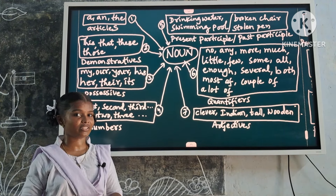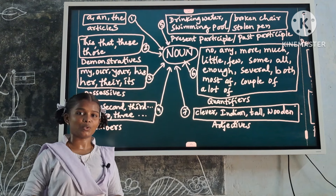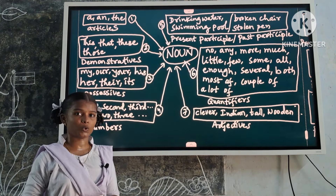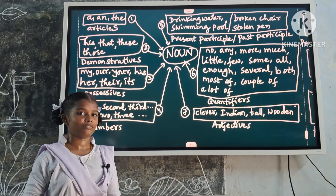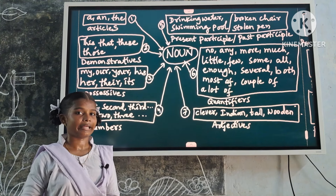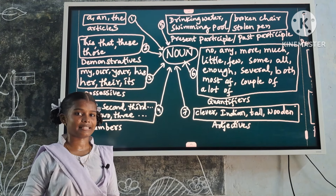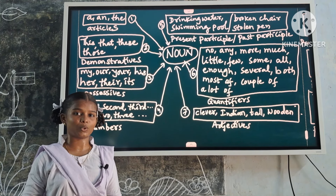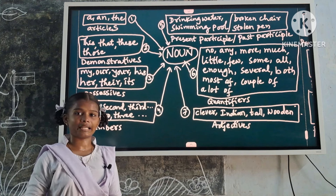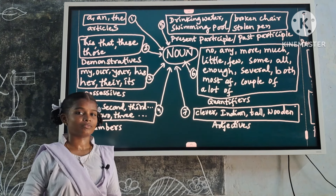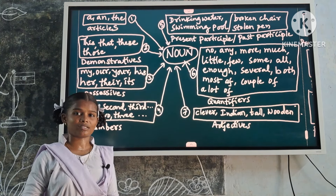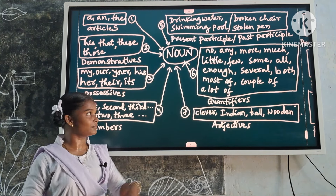Next one: quantifiers — no, any, more, much, little, few, some, all, enough, several, both, most of, a couple of, a lot of. These are noun modifiers because they describe the noun.